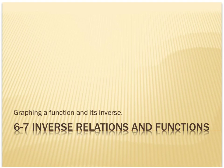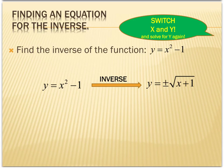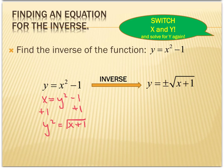Now we're going to be looking at how to graph a function and its inverse. We've previously looked at the function y equals x squared minus 1 and found its inverse by switching x and y and then solving for y. Because we had to take a square root, we had to do plus or minus that square root. Now we're going to look at what the graph of the function and its inverse looks like.